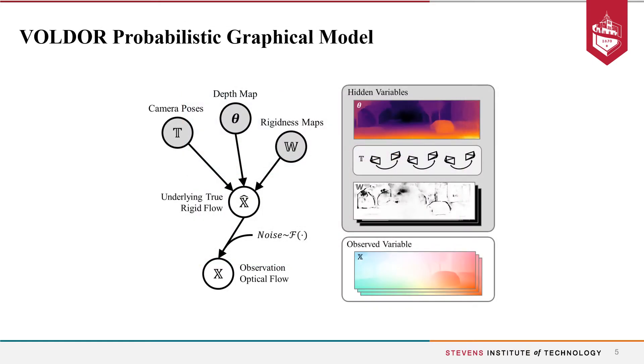We integrated the problem under a probabilistic model where camera poses, depth map, and rigidness maps are modeled as hidden variables, while the optical flow fields are modeled as observed variables subject to a Fisk distributed residue.